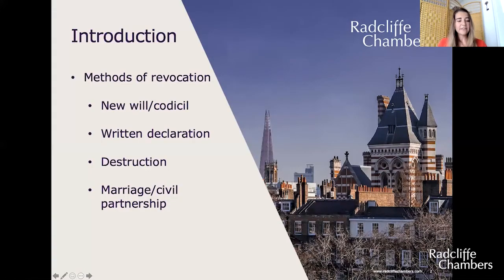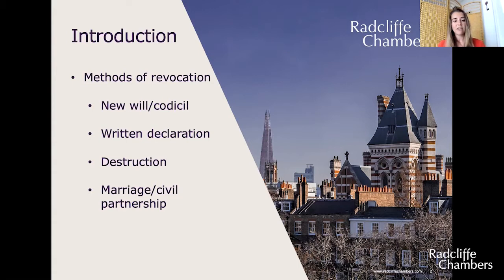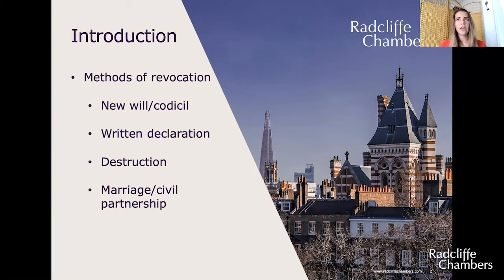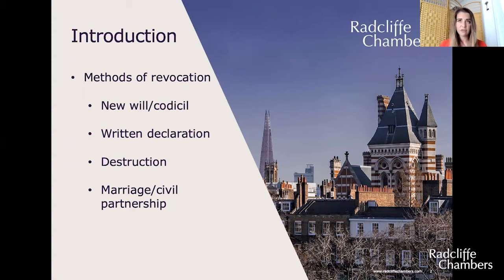These are the main statutory methods in the Wills Act 1837. A testator can generally revoke his or her will by making a new will or codicil, by making a written declaration executed in the same way as a will, by destruction, and by marriage or civil partnership. The first three are grouped under an intentional heading whereas the fourth is automatic on the occurrence of that event. Section 19 of the Wills Act prescribes that a will is not revoked by alteration of circumstances, for example the birth of a child.